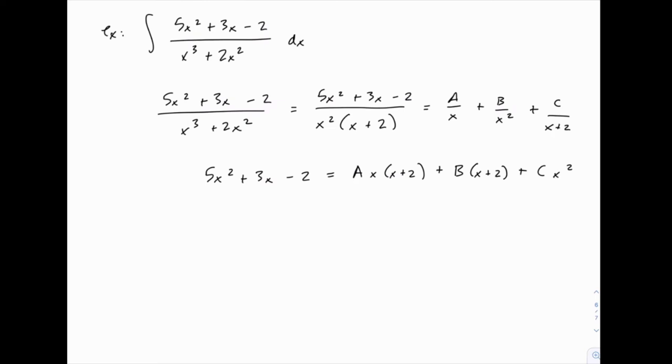So the two simplest values to use would be 0 and -2, and there's not a third factor that would zero anything out. So for our third value, we'll just need to pick another number; we'll pick something easy like 1. We'll use x = 0 and x = -2 because they make things zero out, and then for our third value we'll just pick an easy number, 1, because it will make the algebra as simple as possible.